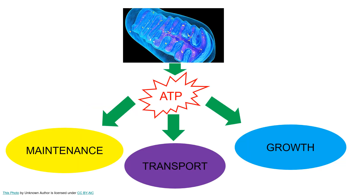Mitochondria produce ATP through the process of respiration, and that ATP is used for different energy-requiring processes in the tree. That ATP is the same regardless of how it's used. But scientists, for purposes of analysis, often categorize the use of that ATP into two or sometimes three categories. The three most common are maintenance, transport, and growth respiration. These categorizations are artificial — it's the same ATP — but we categorize them so we can better analyze energy use in the plant.